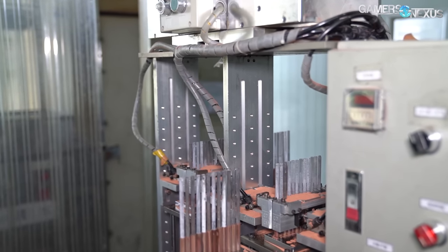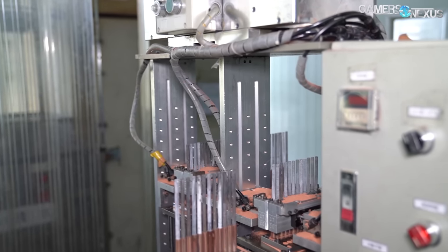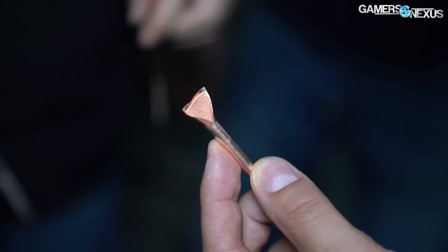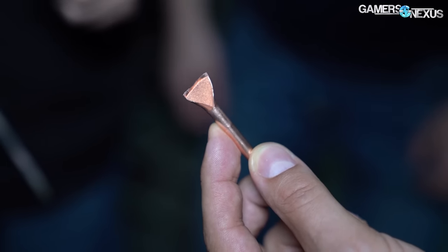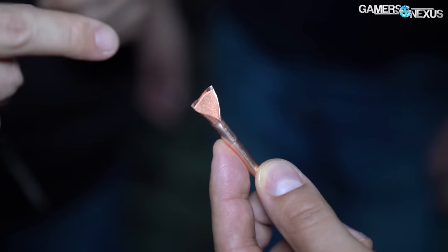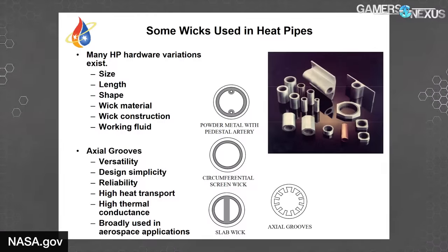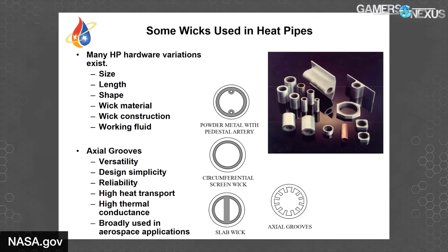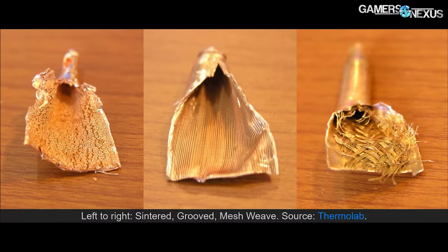Particle size can be varied to produce different pore sizes and increase permeability. We'll cut one open in a few minutes to show you what that looks like. Next up is axial groove interior walling — axial groove heat pipes can be a significant cost cutter in production, as no sintered powder is required; instead, the interior walls are carved into grooves, increasing surface area. Mesh weave wicks are the most common among typical consumer heat pipes, particularly for low-end consumer electronics, as they're cheap yet still provide additional capillary strength.